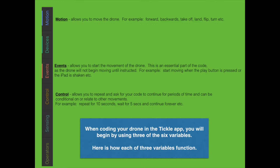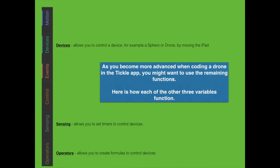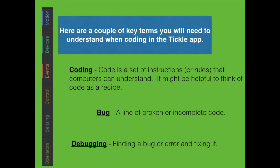As you become more advanced when coding a drone in the Tickle app, you might want to use the remaining functions. The other three variables are devices, sensing, and operators. Here are a couple of key terms you will need to understand: coding itself is a set of instructions or rules, like a recipe or list of things that need to be done. A bug is a line of broken or incomplete code, and debugging is finding a bug or error and being able to fix it.